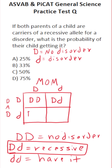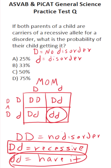In the third box, we get a capital D from the mom and a lowercase d from the dad — this person is also a recessive carrier of the disorder; they don't have it, but they can contribute to someone else having it. In the fourth and final box, the dad gives a small d and the mom gives a small d, meaning that person has the disorder. This occurs in one out of four boxes — one-fourth is the same thing as 25%. So the answer is A.